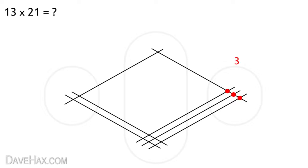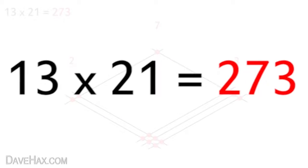So again we count how many times the lines cross 1 2 3 4 5 6 7 and write it at the top. Then move on to the last zone and do exactly the same again 1 2 and that gives us our answer 13 times 21 is 273. Pretty cool huh?